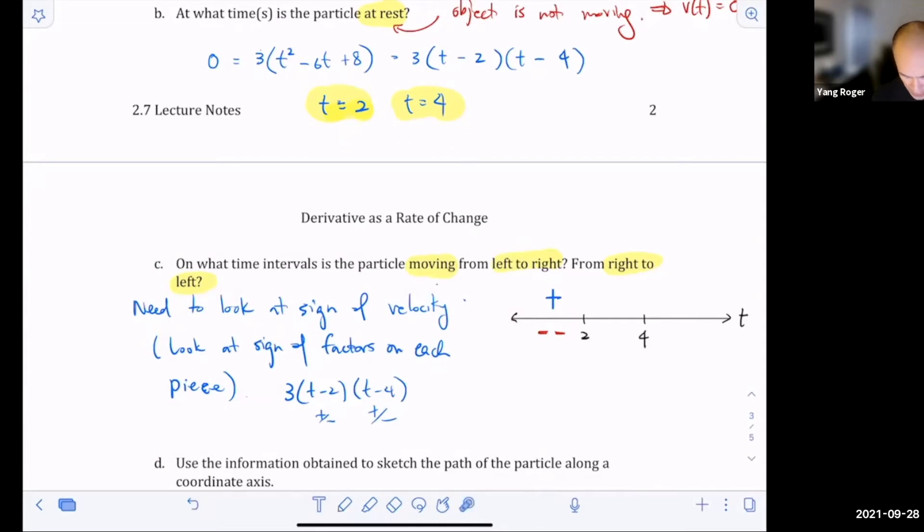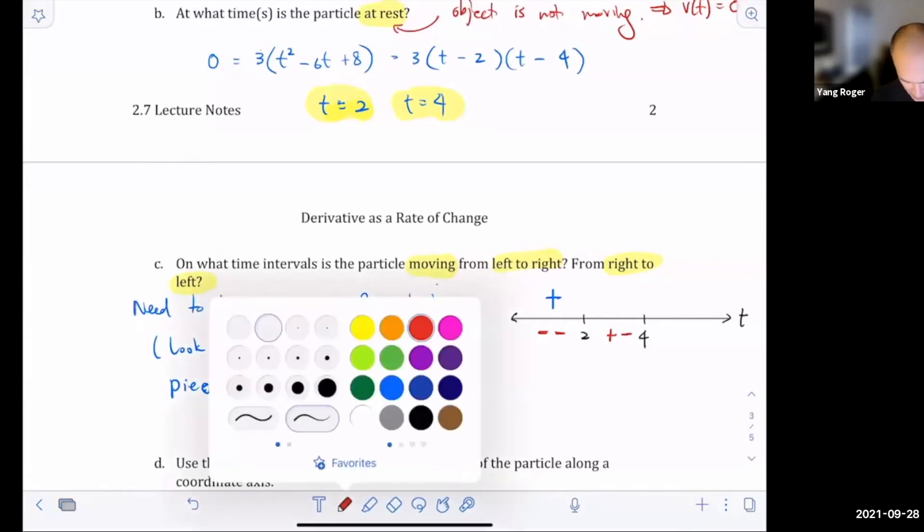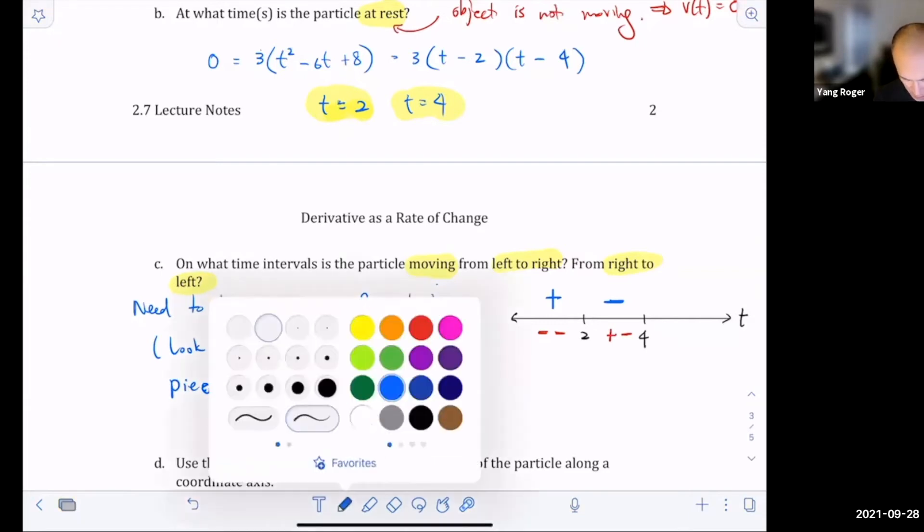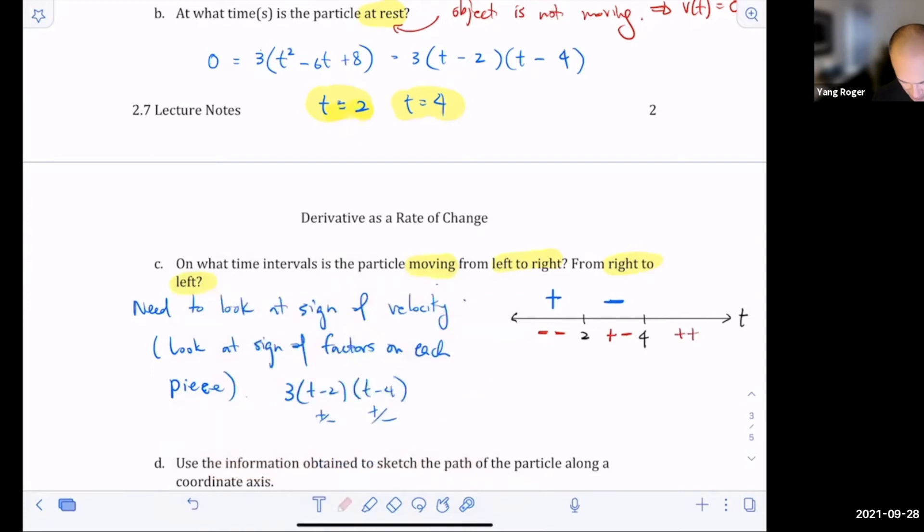Now I want to pick a point or think about numbers in between two and four. You can imagine you pick three or something. If I put a three here, three minus two, that's a positive number. But three minus four is a negative number. So a positive times a negative is going to give you a negative. And then for the last part right here, I want to pick a number bigger than four. Like just imagine you pick five, plug in a five here. That's positive. Plug in a five here. It's positive. So this is positive times positive. Positive times positive gives you a positive.